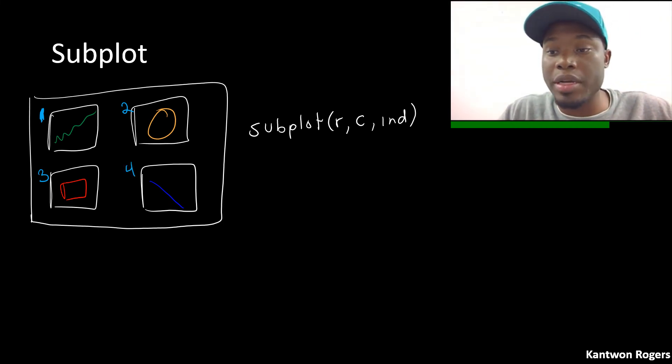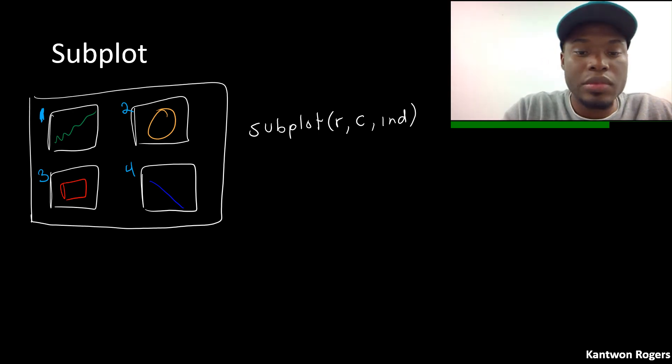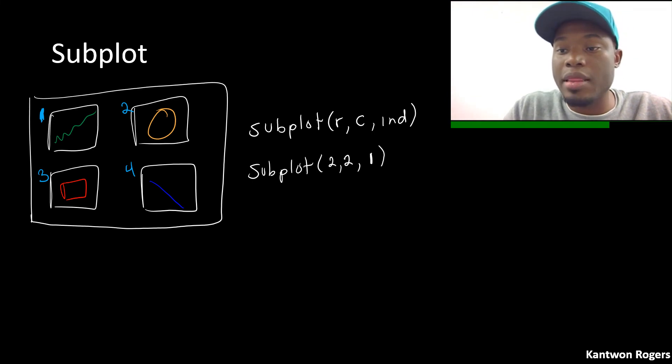So if I wanted to plot that green line the first thing that I would have to do is I would have to say subplot two two, so I'm creating a two by two and I'm going to start off with the first one. And then let's say I had some variables already there that had that data that I wanted to plot. So I could say plot x one y one.